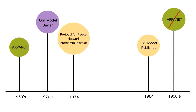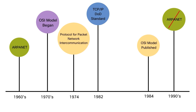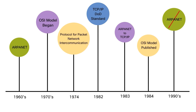In May of 1974, Cerf and Kahn published a paper called 'A Protocol for Packet Network Intercommunication,' which discussed ideas that would be used later in the TCP/IP model. In March of 1982, the Department of Defense declared TCP/IP to be their standard for any computer used in military networking. Then on January 1st, 1983, ARPANET switched from the old networking protocol — NCP, the Network Control Protocol — to TCP/IP, making TCP/IP the dominant networking protocol.